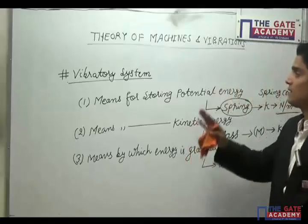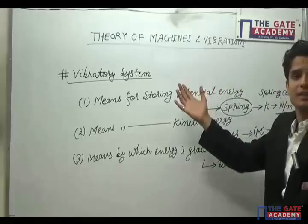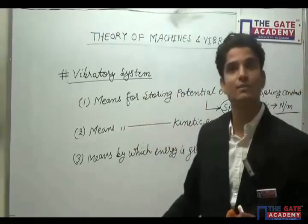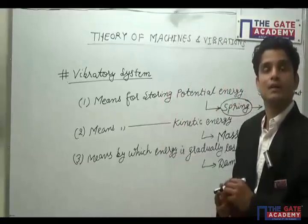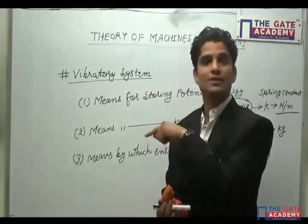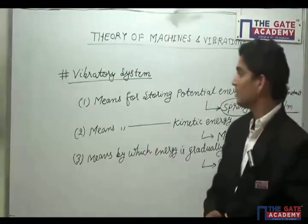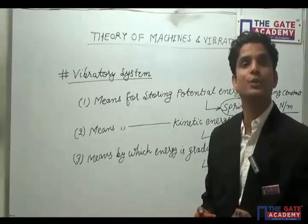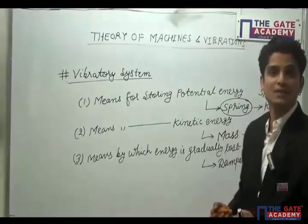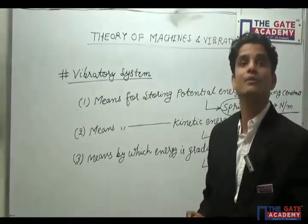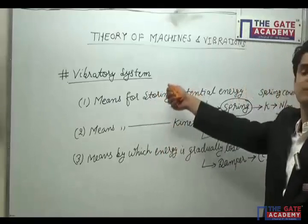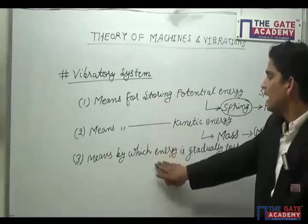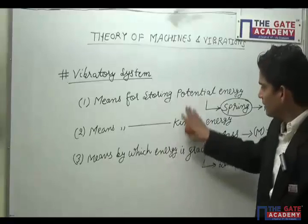To summarize for those who joined late: vibration is nothing but the repetition of the same motion again and again. This is very important for a mechanical engineer because we want control over vibration, and that control can be achieved only when we know how the system functions — which requires knowing the fundamentals. The fundamental quantities of a vibratory system are: means for storing potential energy, means for storing kinetic energy, and means by which energy is gradually lost.